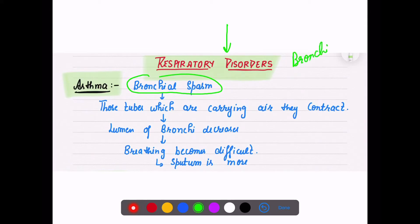As you know, bronchi, bronchioles, and then the alveoli - bronchial spasm means those tubes, bronchi, which are carrying air, have a contraction. If due to their contraction they become narrower, the passage will have less and less space.